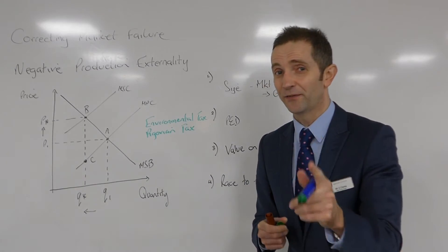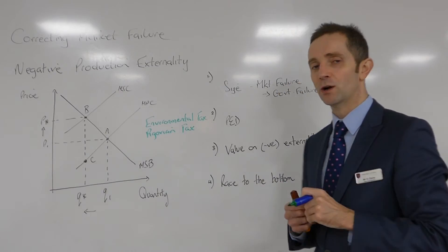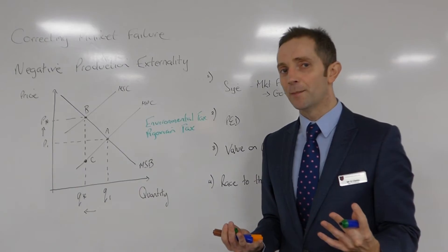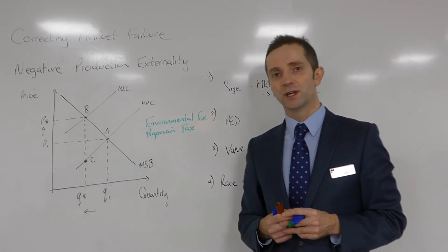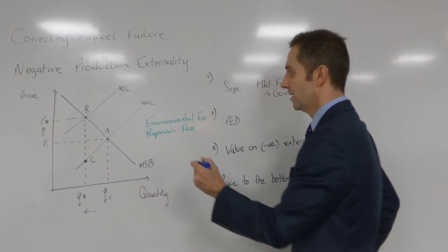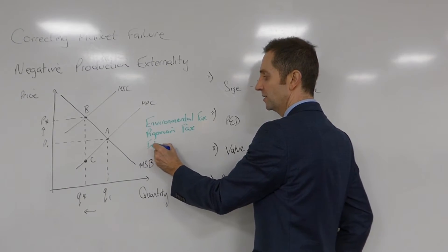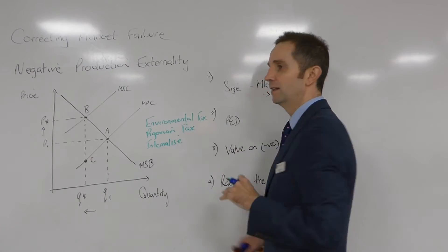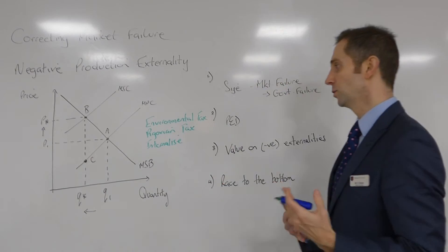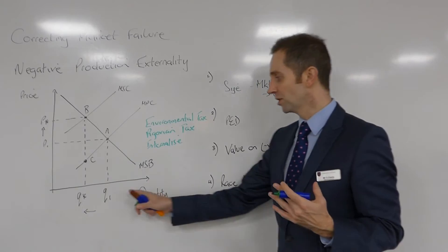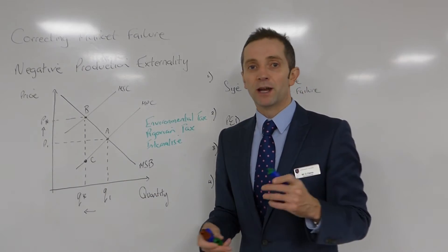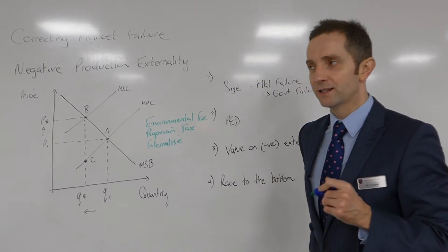In other words, get the polluting firm to pay for the damage which it is imposing upon society. That is another very useful phrase to be using here, ladies and gentlemen: we are internalizing the externality. So what we want to do is reduce output from Q1 to Q star by way of tax. Now, how much will that tax be?